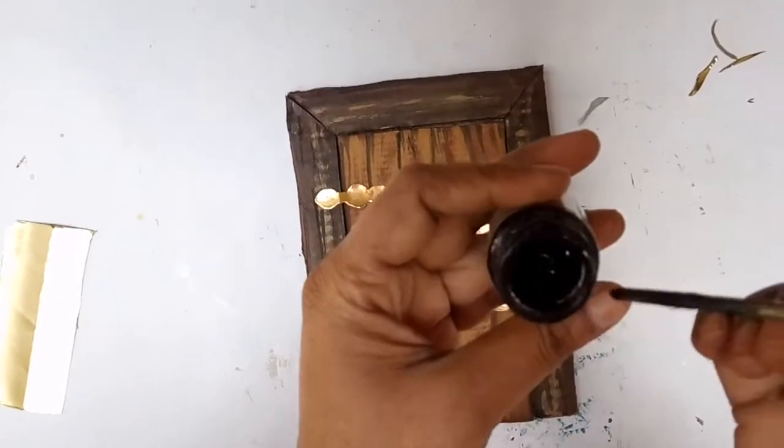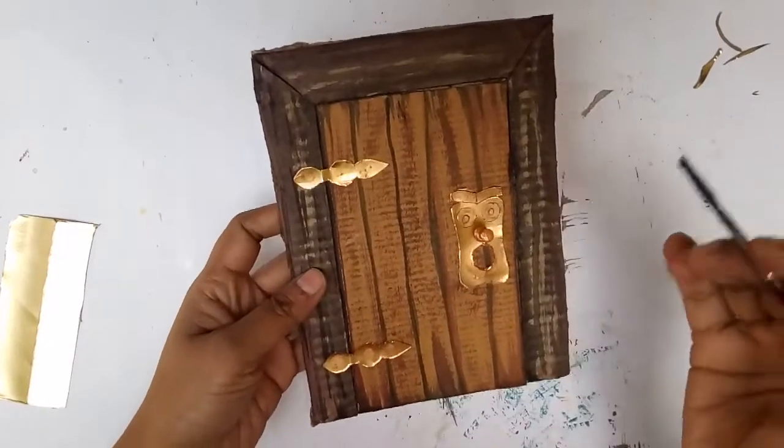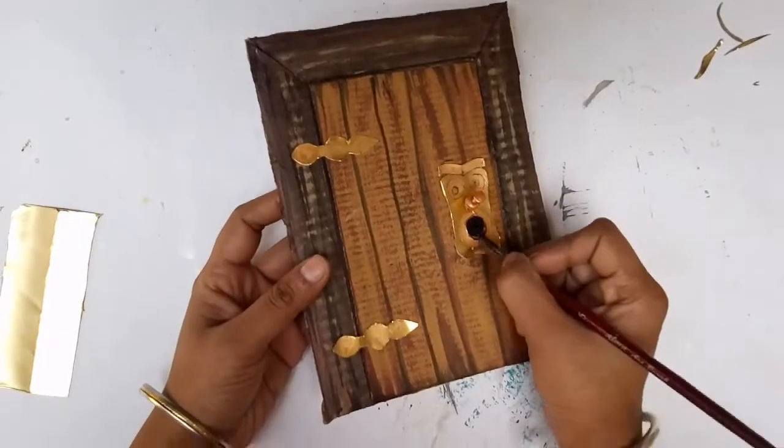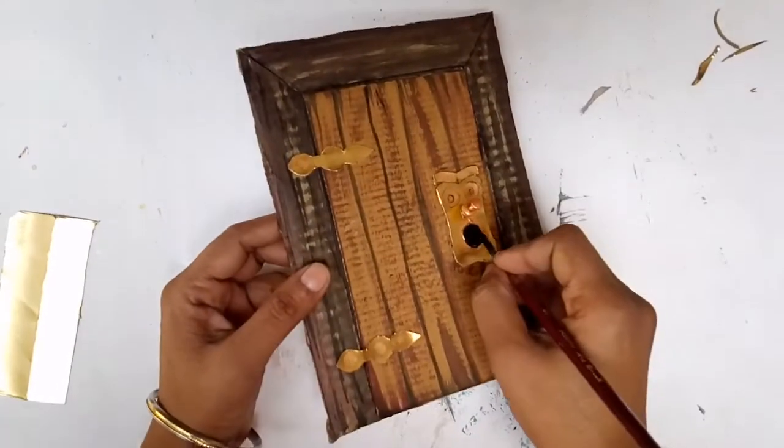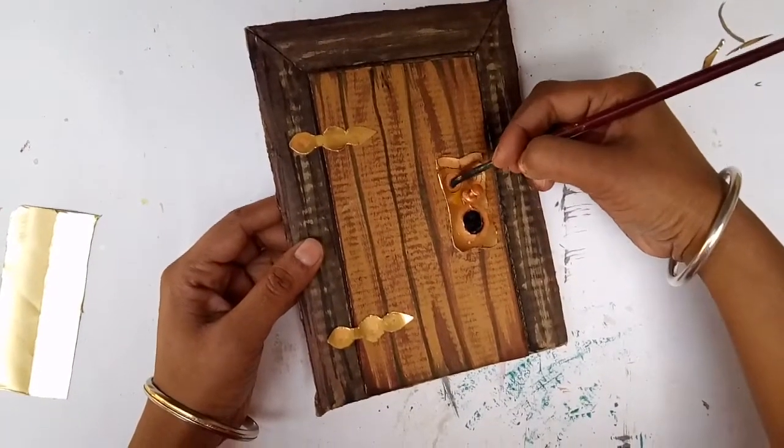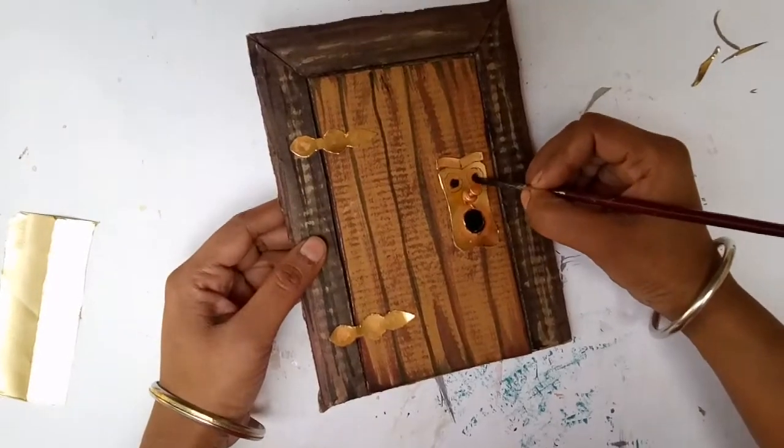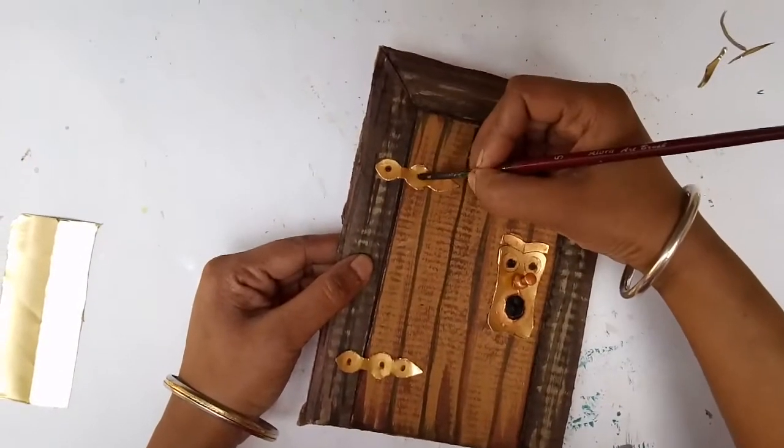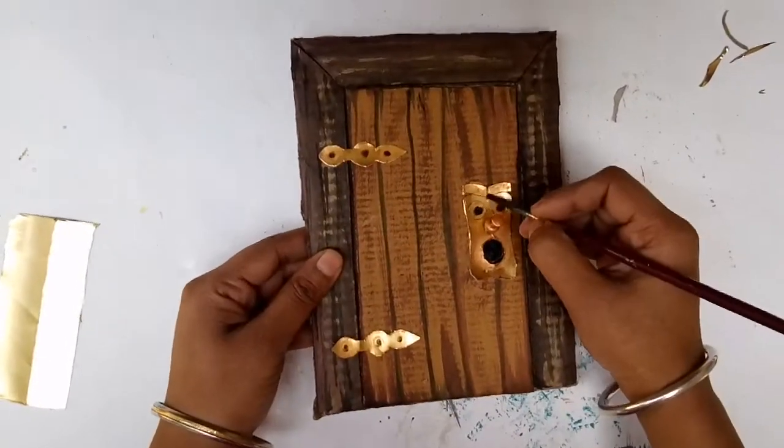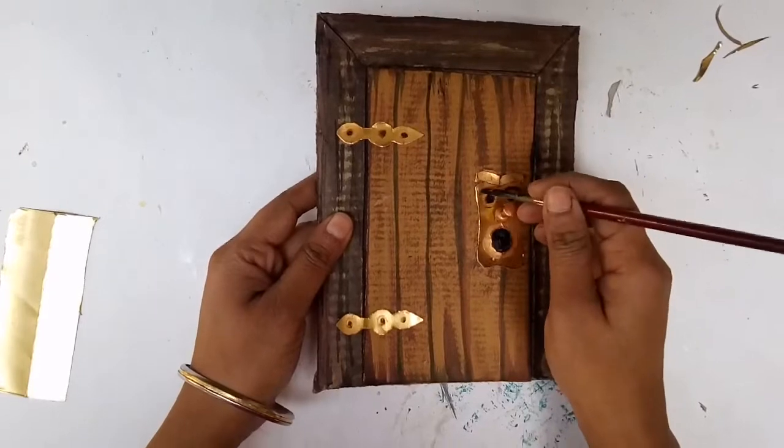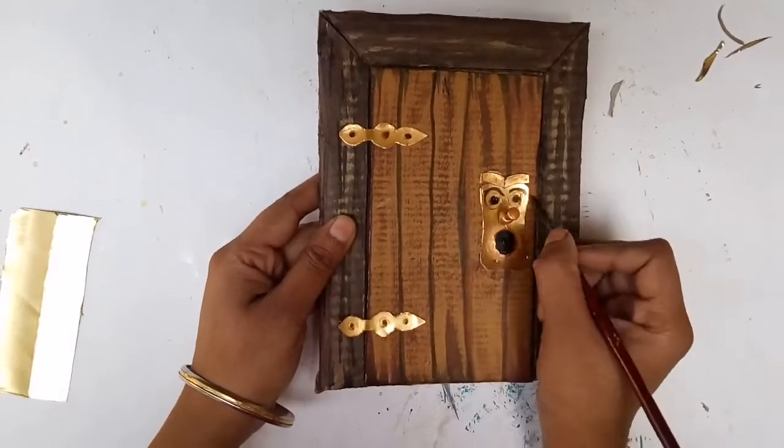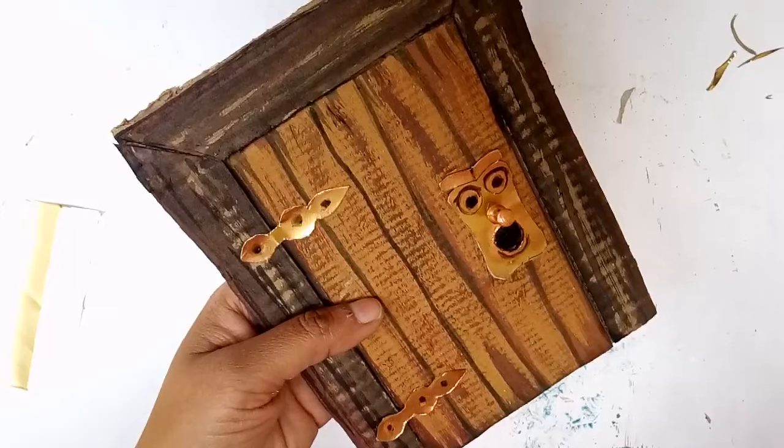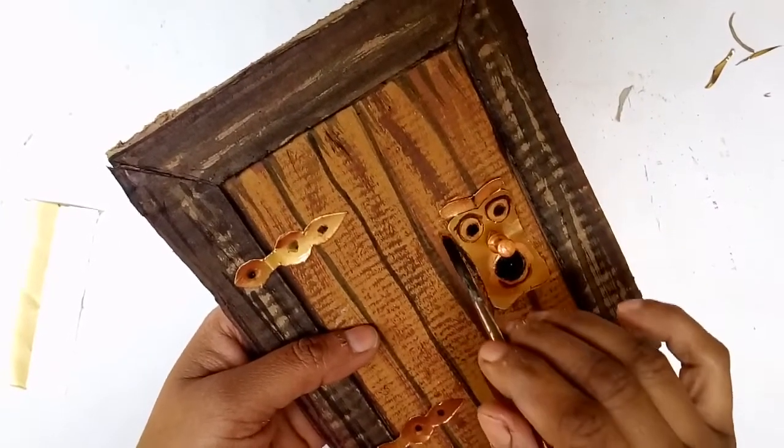Next I am using a little bit of black color and painting the inside of the mouth. Then I am also making the eyes and the knobs here, a little more shading just to highlight this.